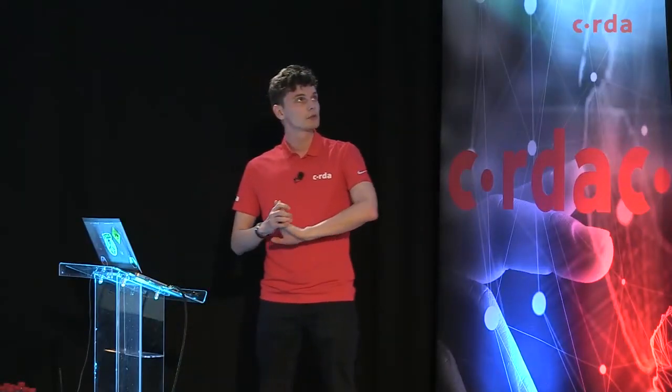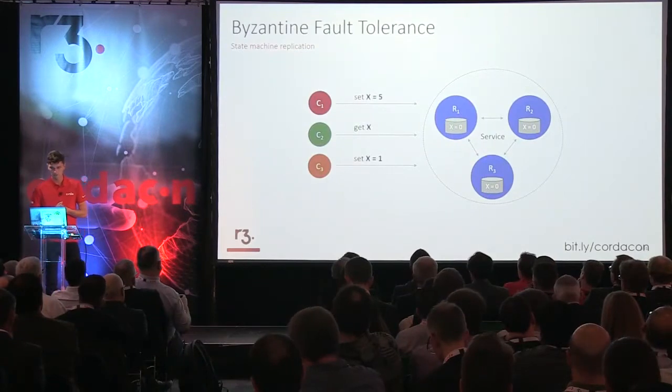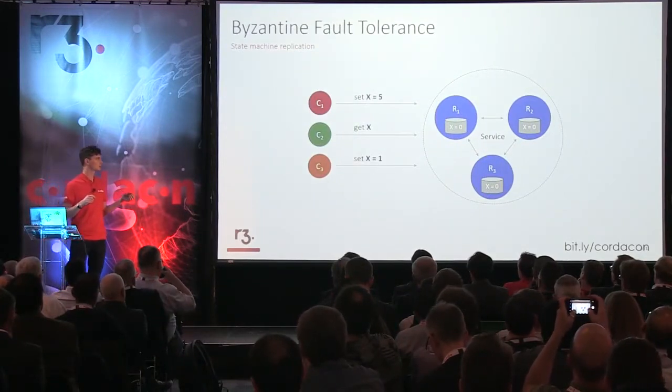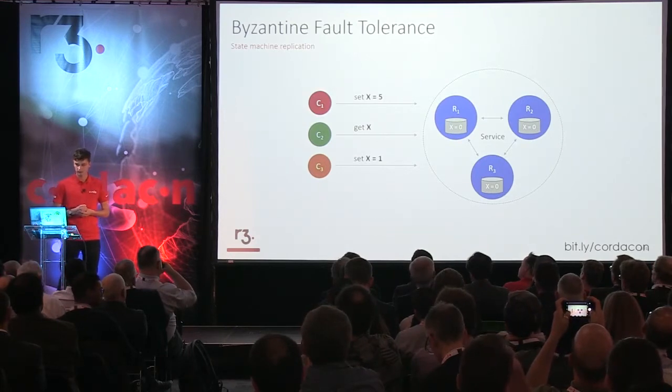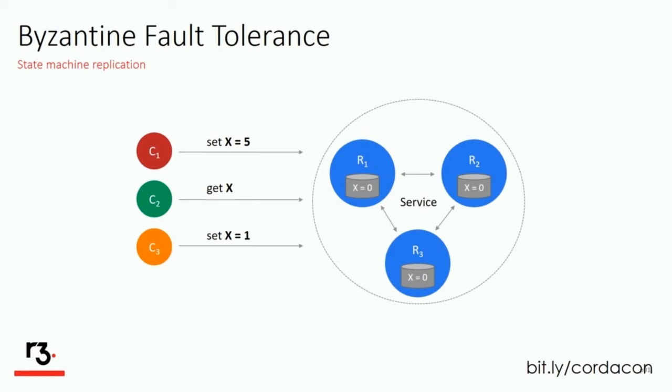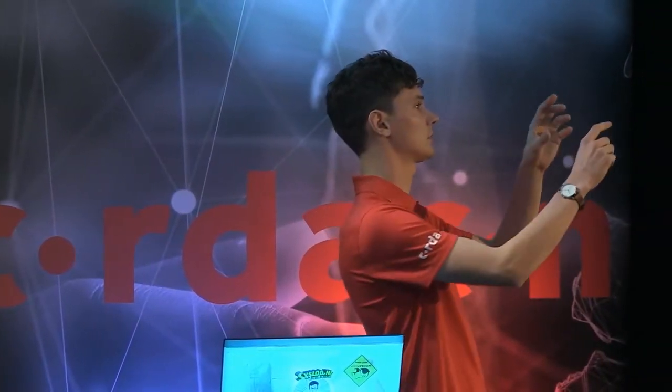Now let's move on to Byzantine fault tolerance. The term Byzantine fault effectively means that a node in a system can fail arbitrarily and can exhibit malicious behavior. This family of protocols originates from database replication mechanisms. In this example we can see a service containing a replicated state machine with state x, and multiple clients sending requests for modifying that state. The goal of the consensus protocol is to order these client requests and apply them in the same order on every replica so that the state evolves consistently.